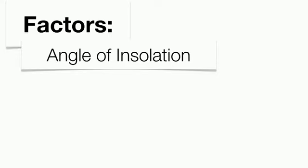There are a couple of factors that are going to influence the sun's energy. First is the angle of insolation. The higher the angle, the greater the sun's energy. The lower the angle, the less the sun's energy. The greatest angle you can get is 90 degrees. The lowest angle of insolation is zero degrees. This is a major factor that's going to influence the course of the day, and it's also going to influence our seasons as well.